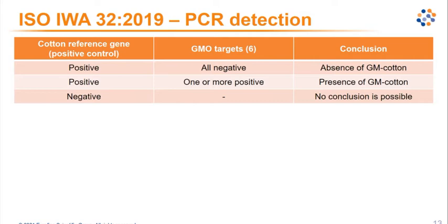According to the ISO IWA32 protocol, there are seven targets tested in the PCR analysis. One is a cotton reference gene used as a positive control to verify that sufficient cotton DNA could be extracted from the sample. The other six targets are GMO sequences engineered in different cotton GMOs — making this a GMO screening for six targets.